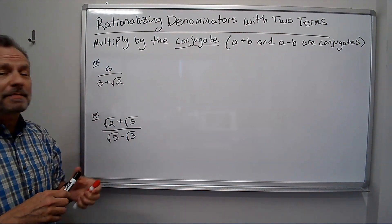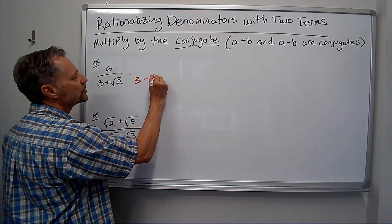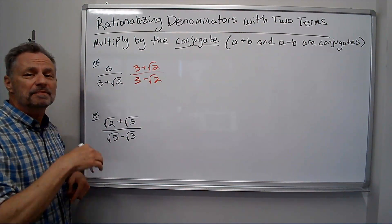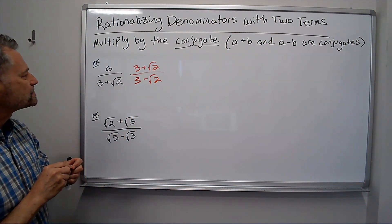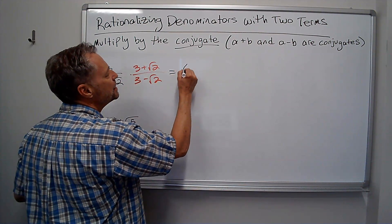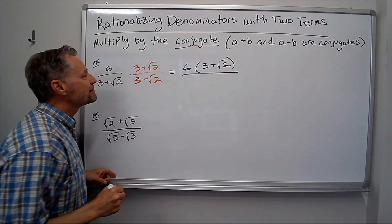The idea is multiply by the conjugate. The conjugate of 3 plus square root of 2 is 3 minus square root of 2. And we know whatever we do at the bottom, we have to do at the top. That's multiplying by 1, it doesn't change the value. Now I'm going to leave the top just as it is. I'm not going to actually multiply it out yet, because sometimes I'll be able to reduce.